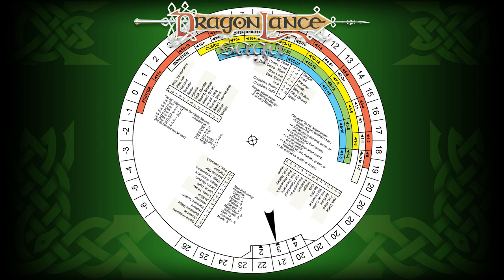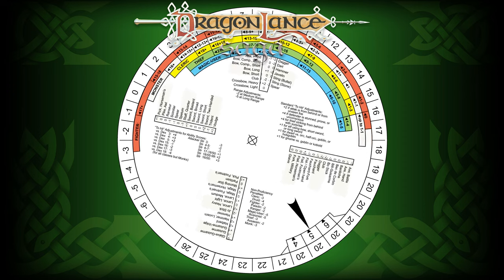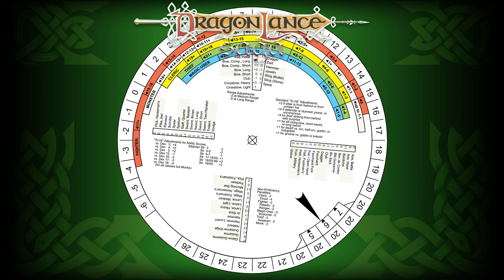To determine your to-hit number — the number you need to roll over with a D20 — line up the pointer on the edge of the plate with the number on the inner ring of the base that represents the defender's armor class. Next, find the class level arc for the attacker and refer to the brake line to the left of the arrow. That is what you need to roll to hit. You can then refer to the weapons window for the weapon you are using against that armor class and apply its modifier. This gives you the adjusted to-hit number. Different weapons are more or less effective against different armor classes, as armor classes represent types of armor worn by the defender.